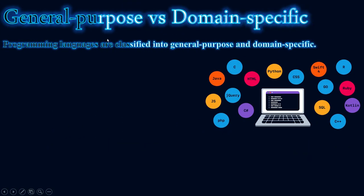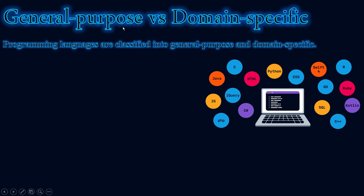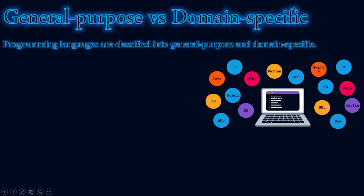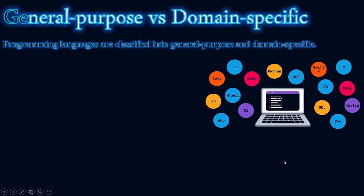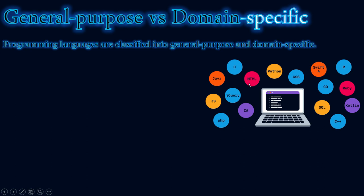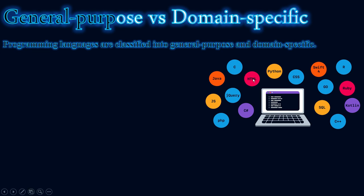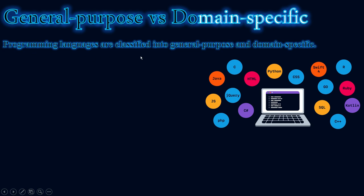There are two types of programming languages: general purpose and domain specific. For example, Python is a general-purpose programming language, meaning you can do almost anything with it. Other languages like HTML and CSS are domain-specific, meaning you can only use them in a specific area. HTML and CSS, for instance, are specifically for web development.